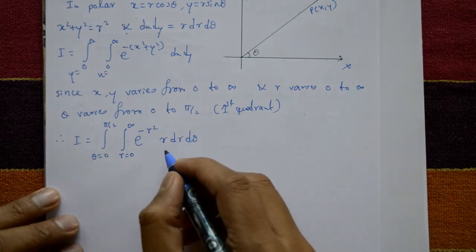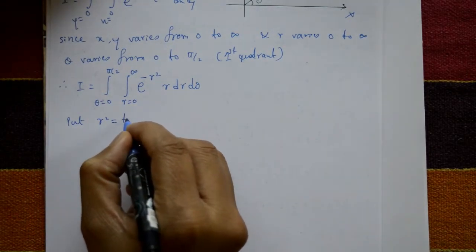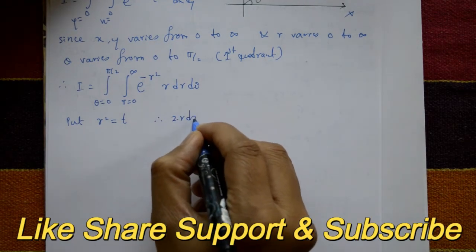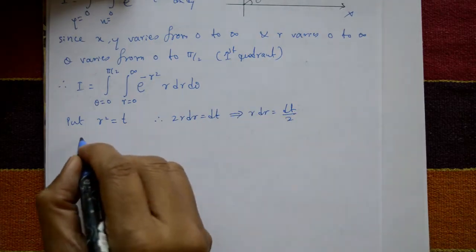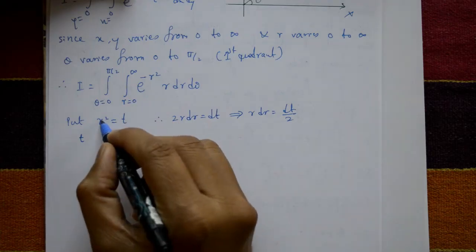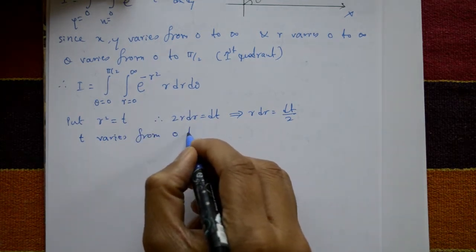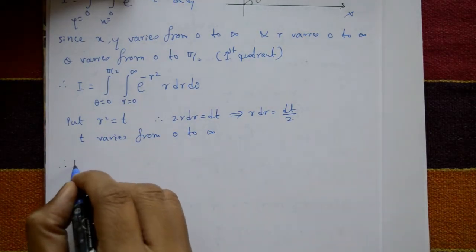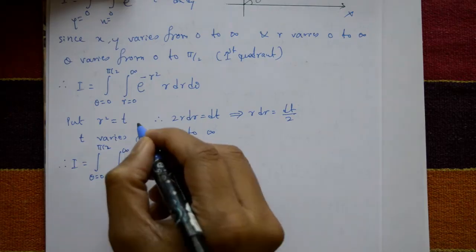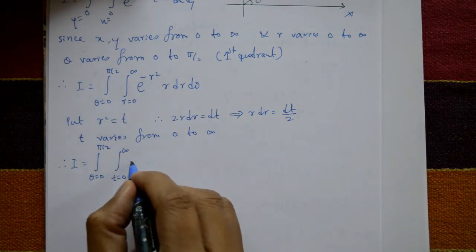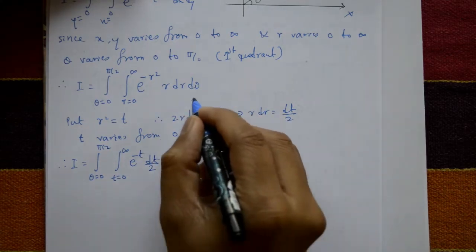This is not directly integrable, so we substitute t equal to r square. Differentiating, 2r dr equals dt, so r dr equals dt by two. When r equals 0, t equals 0; when r equals infinity, t equals infinity. Therefore I equals integration of theta from 0 to pi by two, and integration of e to the minus t, dt by two, d theta.